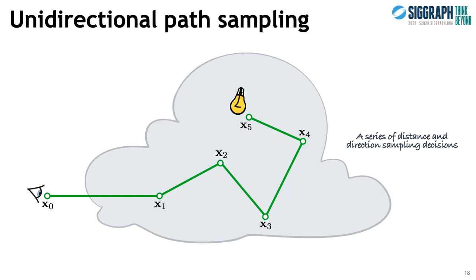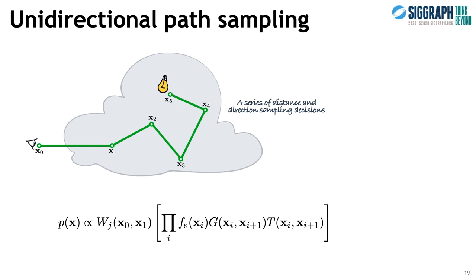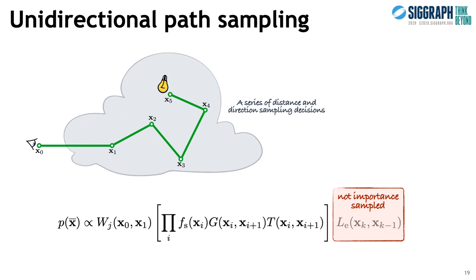The PDF of this technique is proportional to the product of all terms in the path contribution except for the emission. It thus needs to randomly land on a light source to obtain a non-zero contribution, and the probability of this happening depends on the size of the light sources. It can therefore perform poorly when the sources are relatively small, which is common in practical scenes.